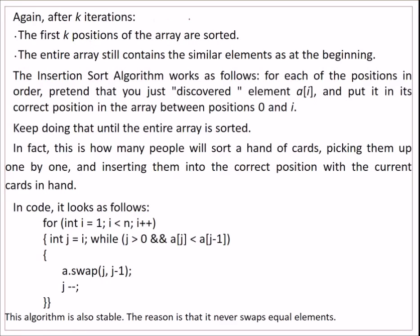For insertion sort, after k iterations the first k positions of the array are sorted, and the entire array still contains the same elements. The algorithm works by pretending you just discovered element a[i] and putting it in its correct position — like picking up a card and inserting it among the cards already in hand. The outer loop runs from 1 to n, and inside we start with j equal to i.